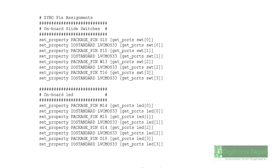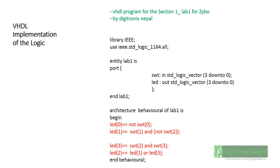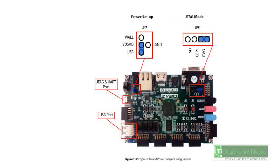You can get the master XDC file from the Zybo reference manual, from the Digilent website on the Zybo product page, or from the Xilinx website. This constraint file is also the configuration needed for programming.